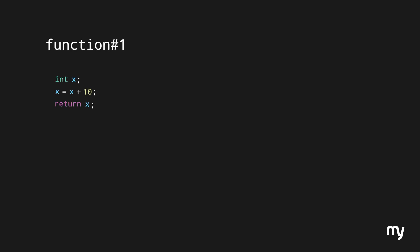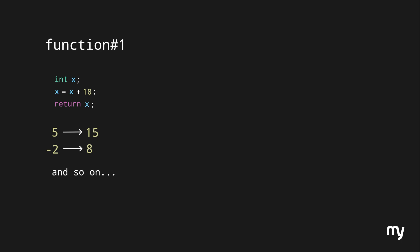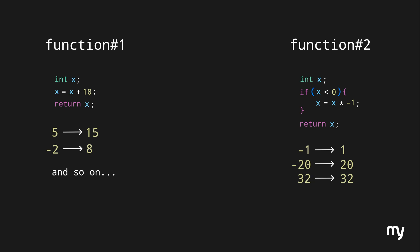We'll write two functions. Function 1 takes an integer as input, adds 10, and returns the value — so when the input is 5 it returns 15, and when the input is minus 2 it returns 8. Function 2 takes an integer and returns its absolute value. In simple terms, the absolute value of an integer is its positive counterpart — the absolute value of minus 1 is 1, for minus 20 it will be 20, and if the integer is positive the value remains the same.